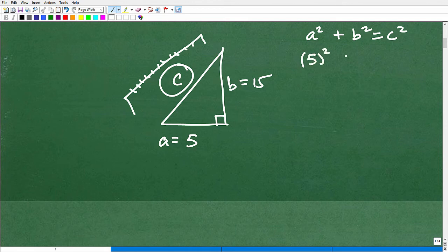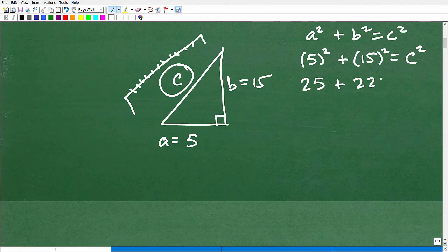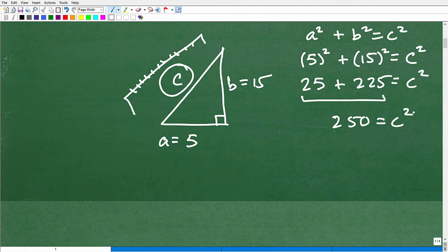So it's going to be 5 squared plus b, which is 15 squared, is equal to c squared. We don't know what c is. So we're looking to solve that. So 5 squared is going to be 25 plus 15 squared is going to be what. And you can get your calculator out here. That's going to be 225. So that's equal to c squared. So 15 times 15 is 225. 5 times 5 is 5 squared. Now I'm going to add these two together, and I get 250 is equal to c squared. So c squared is equal to 250.